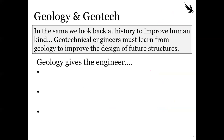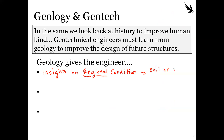Geology gives the engineer three main things. First, it provides insights on regional conditions. A geologist isn't going to care about the southwest corner of a specific intersection — they provide a regional idea of the type of soil and rock found in that area, including how it got there, what type of deposit it is, and the mineralogy, which all correlates to strength.